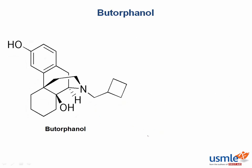Butorphanol is as effective as morphine when it comes to relieving moderate pain, but it is less effective for alleviating severe pain. Butorphanol is also a mixed action opioid, meaning in addition to binding at the mu receptor, it also binds to the kappa receptor.